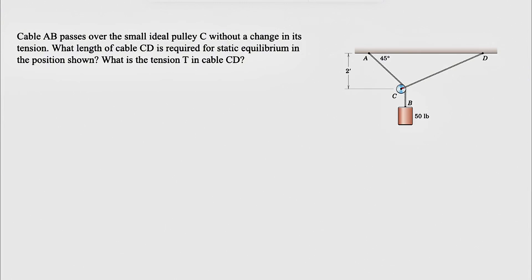All right guys, let's see how we can solve another question from the third chapter of the Merriam textbook in Geomechanics. We have a cable AB that passes over the small ideal pulley C without a change in its tension. The question is asking what length of cable CD is required for static equilibrium in the position shown? And also what is the tension T in cable CD?